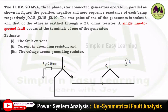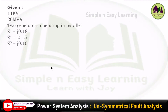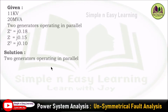Two generators are connected in parallel, and the neutral point of one generator is connected to ground through a neutral resistance of 2 ohm. Given data: 11 kV, 20 MVA, two generators operating in parallel. Positive sequence impedance is J0.18, negative sequence impedance is J0.15, and zero sequence impedance is J0.10. We are going to find the sequence impedance and draw the sequence network for all three sequences.